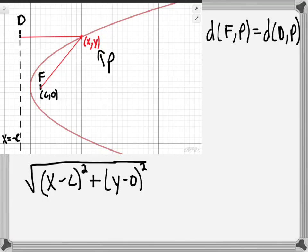Looking at the distance to the directrix, it's x units to get to the y-axis, then another c units to reach D. We could write this as x minus negative c. But since c could be negative, we write it as an absolute value: |x + c|.